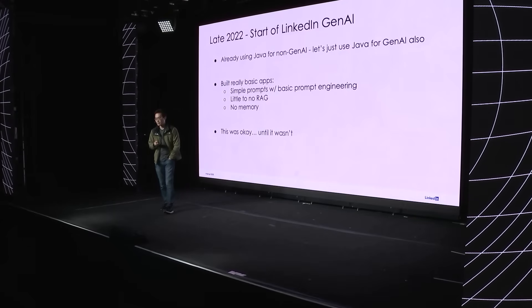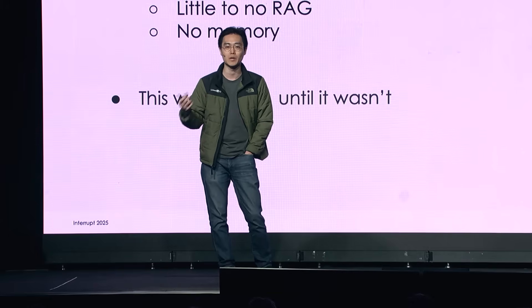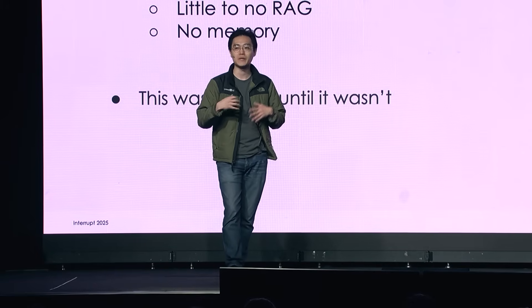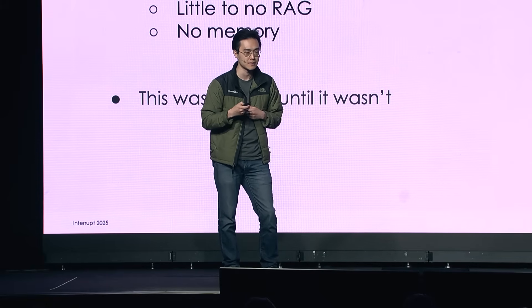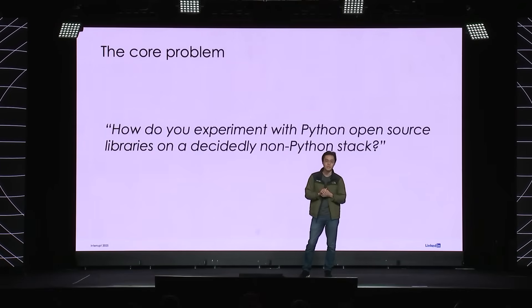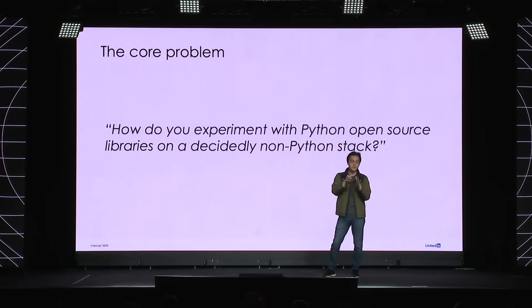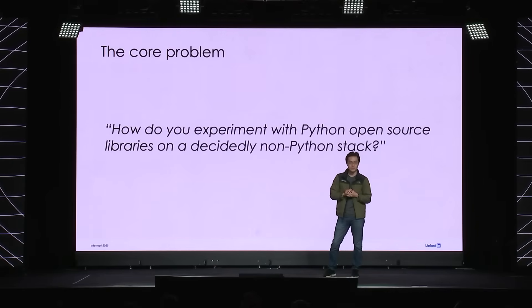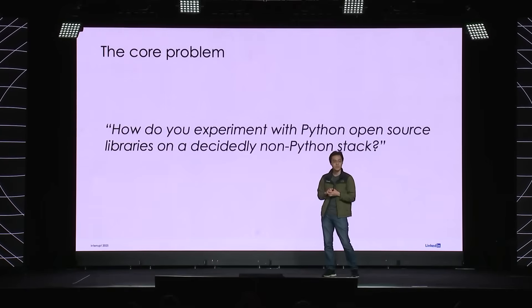What we saw was a lot of teams wanted to experiment with Python — they wanted to use Python for prompt engineering and evaluations — but because of our stack, they were forced to build in Java. The more fundamental problem we faced was: how do you experiment with the open source libraries and the open source community if your stack is fundamentally non-Python? As soon as there is that language gap, it becomes really difficult for teams to innovate and iterate with the latest and greatest techniques.